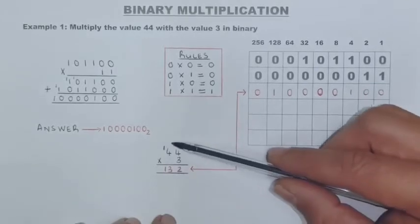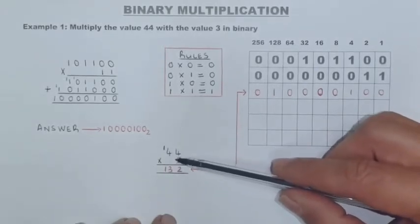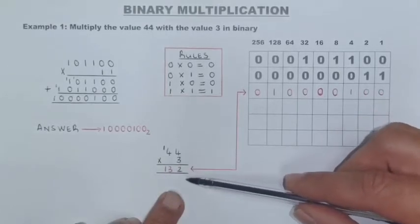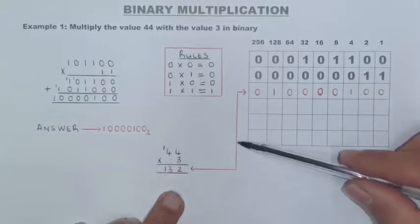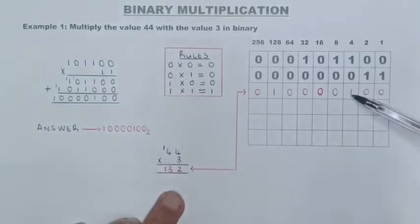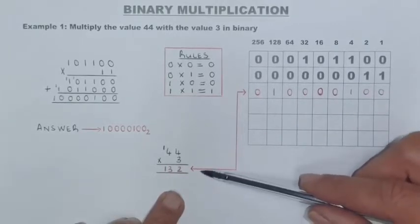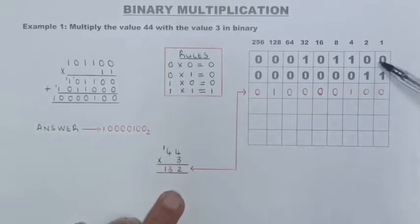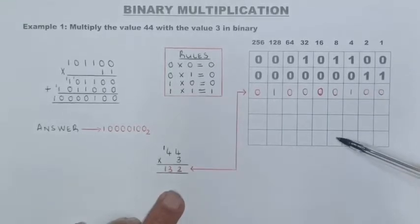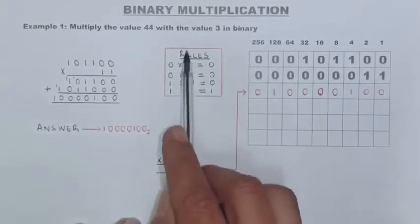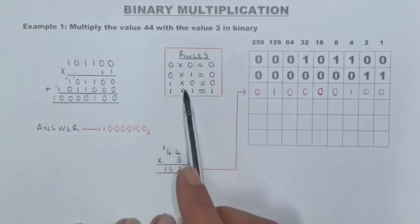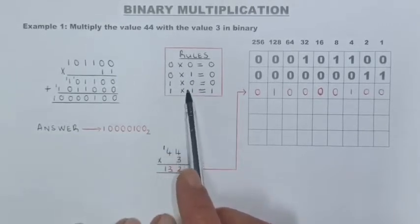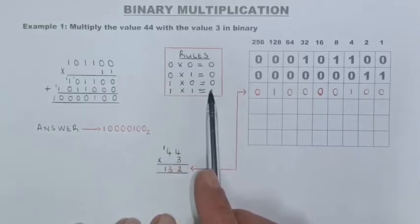The next thing you do is multiply 44 by 3 to get the decimal number for those two values. Then take 132 and put it into the code system to see the binary equivalent for 132, which will be your actual answer when you multiply these two together. Here is the set of multiplication rules: anything multiplied by zero gives zero, and one times one gives one.